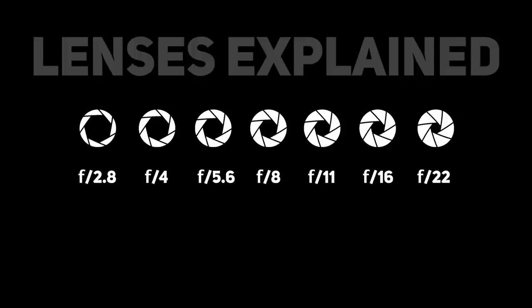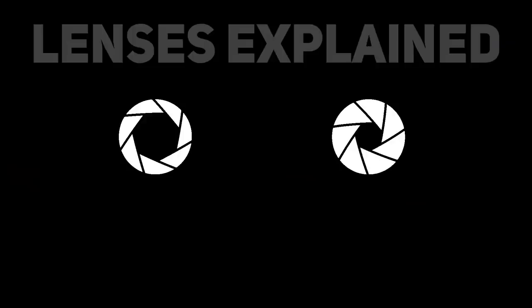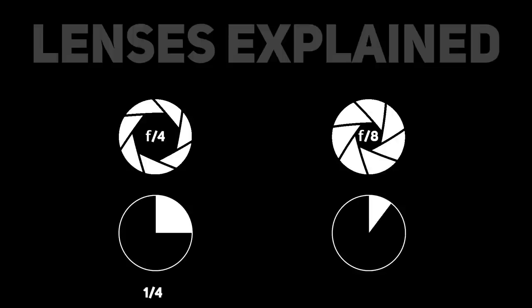At first glance the aperture scale may seem fairly random, but there is a pattern: every other number is a doubling in value. The numbers are fractions — hence written as f/4 or f/8. f/4 is simply one quarter and f/8 is simply one eighth. As we know, an eighth is half the size of a quarter, so f8 represents an opening exactly half the diameter of f4.